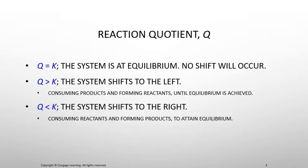The reaction quotient Q is set up the same way as K, so we can write Q equals the product concentrations raised to the power of their coefficients divided by the reactant concentrations raised to the power of their coefficients. When we look at the relationship between Q and K, there are three possibilities.